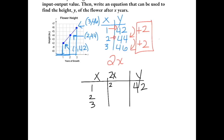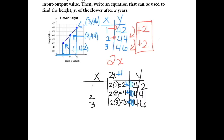If we apply 2x to each input: 2 times 1 gives us 2, 2 times 2 gives us 4, and 2 times 3 gives us 6. Then comparing to the output values 42, 44, and 46: to get from 2 to 42 we add 40, from 4 to 44 we add 40, and from 6 to 46 we add 40. So our function rule is 2x plus 40, and our equation is y equals 2x plus 40.